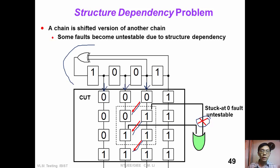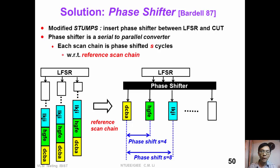So how can we solve this problem? It was proposed to insert a phase shifter between the LFSR and the CUT. On our left, we see the original STUMP architecture. On the right, we insert a phase shifter between LFSR and the CUT.